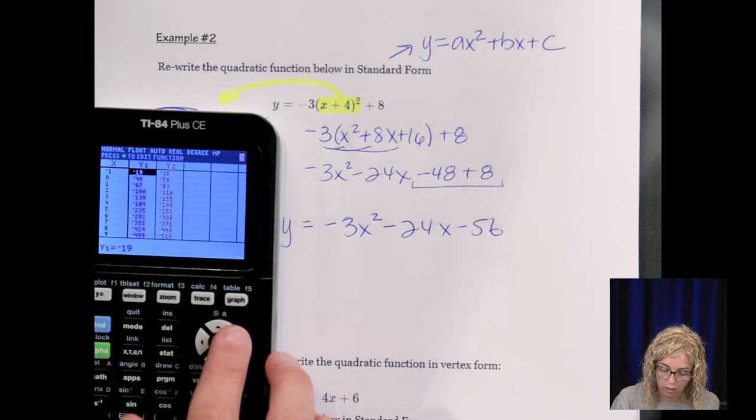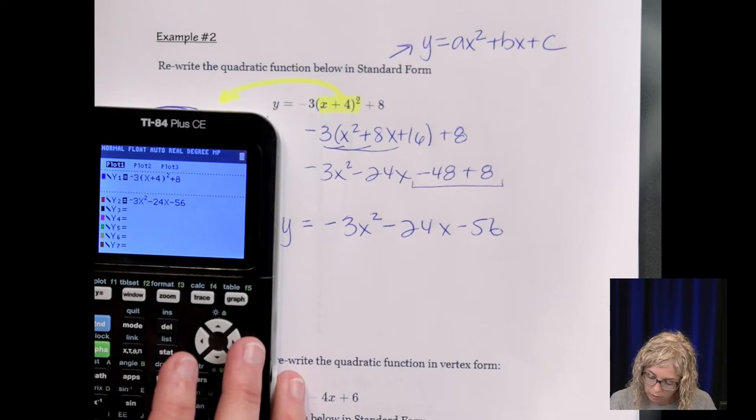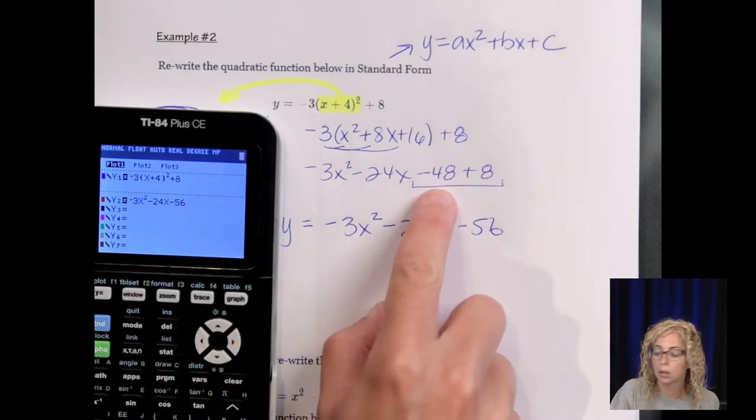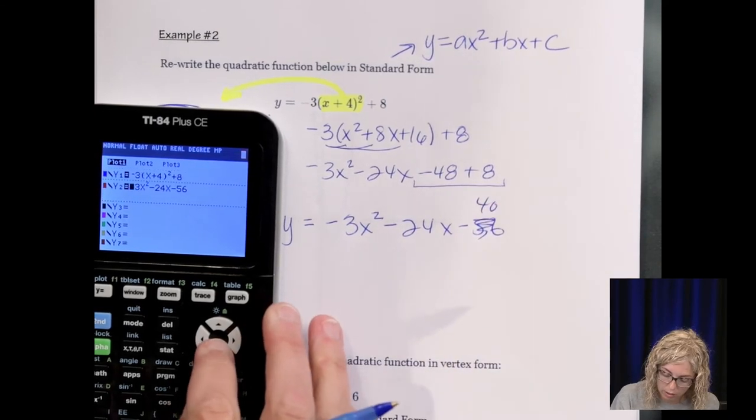And you can always check that you are correct, either in delta math or using the tool, by typing the original equation into the calculator. Just want to go slow and not rush it like me. And then type your answer in, and you should have the same table of values. Or the graph of the second should go right over the top of the first. So I look here, and they're different. So did I type something in wrong? Oh, right here.